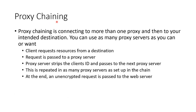Proxy chaining is merely daisy-chaining proxy servers going from one to the next. You can have as many proxies as you want. The client request bounces from proxy server to proxy server — each server strips out the client ID and passes it to the next server, repeated as many times as you have proxies in the chain. Finally, the request is actually passed to the web server. Most proxies have an encrypted connection to the proxy, but if your original connection is meant to be unencrypted, then the last connection to the web server is also unencrypted.